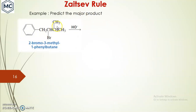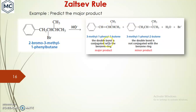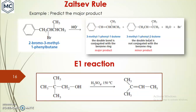Next example: predict the major product of this compound. In this particular example there is some difference — hydrogen can be removed from here, giving a double bond here, or from this carbon giving a double bond here. The major product is actually the less substituted one, but this double bond is in conjugation with the benzene ring, which stabilizes it. That conjugation is the exception to Zaitsev's rule.